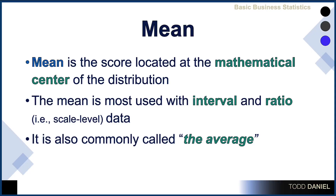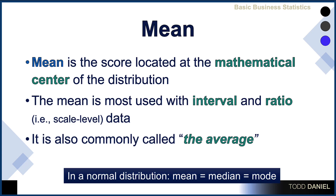Later, when we learn about the normal distribution, we will discover that the mean, the median, and the mode are approximately equal in a normal distribution. We will also use a comparison of the median and the mean as we learn about skewness.